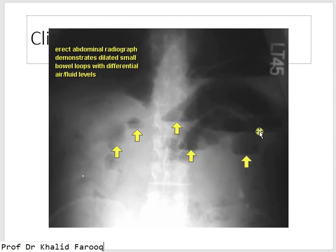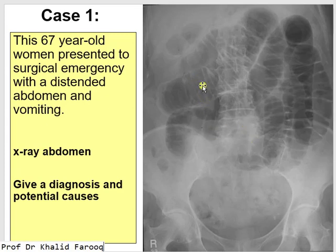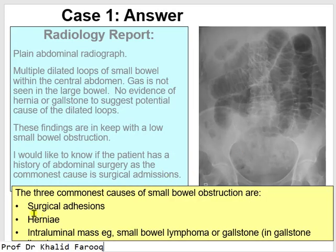Here is a case: a 67-year-old woman presented to the surgical emergency with a distended abdomen and vomiting. On X-ray of the abdomen, central gut loops are dilated with complete mucosal folds, suggesting dilated small intestine, most probably due to obstruction. The causes of obstruction include surgical adhesions, hernia, intraluminal masses like lymphoma or adenocarcinoma, gallstone, tuberculosis, intussusception, peritoneal adhesions, and hernias.